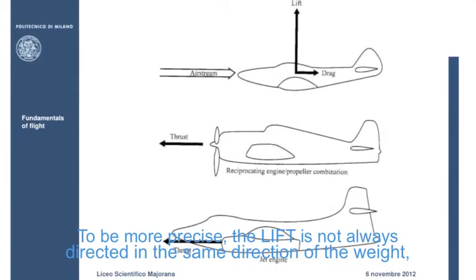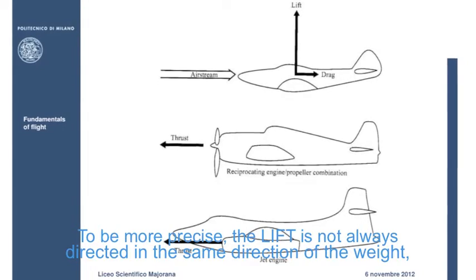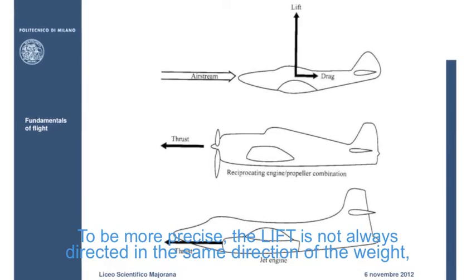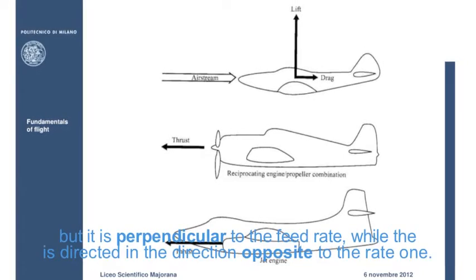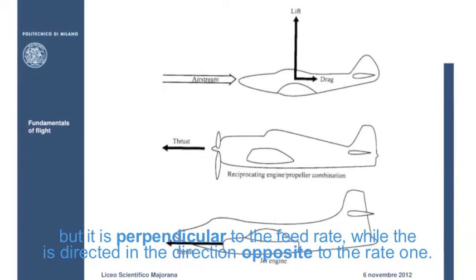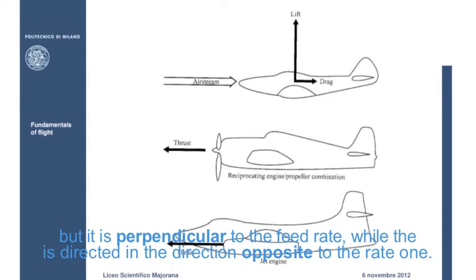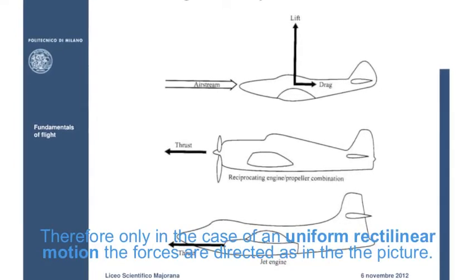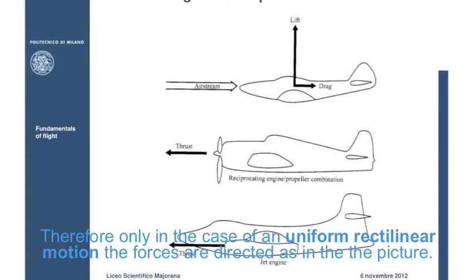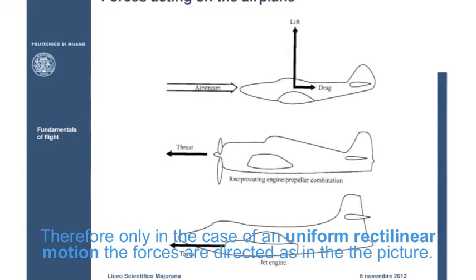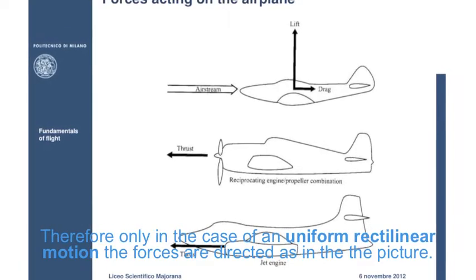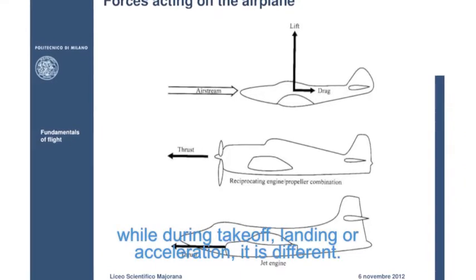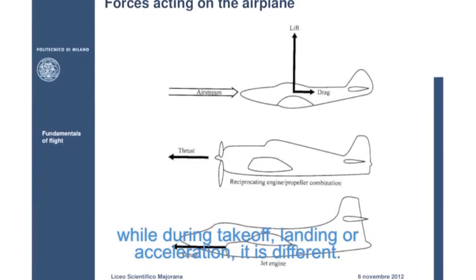To be more precise, the lift is not always directed in the same direction of the weight, but it is perpendicular to the feed rate, while the drag is directed in the direction opposite to the weight one. Therefore, only in the case of a uniform rectilinear motion the forces are directed as in the picture, while during take-off, landing or acceleration it is different.